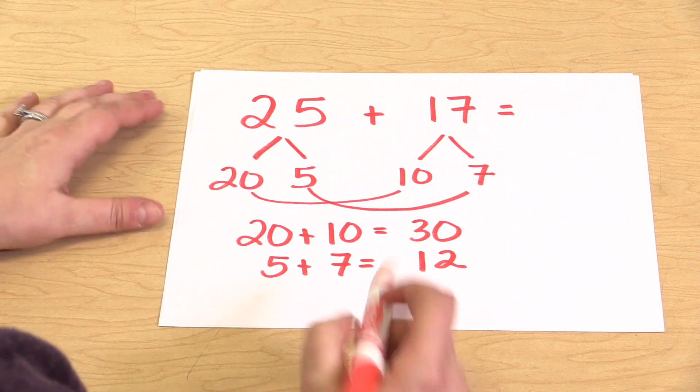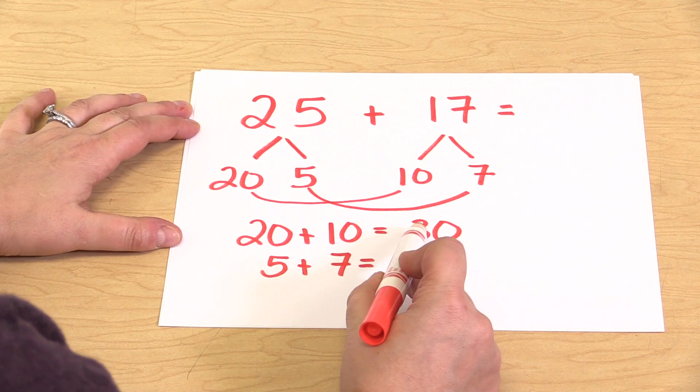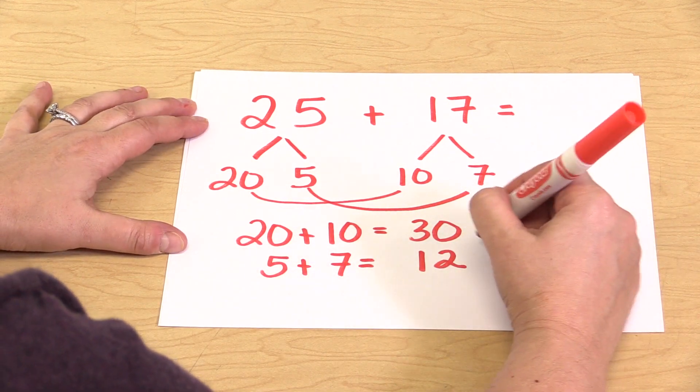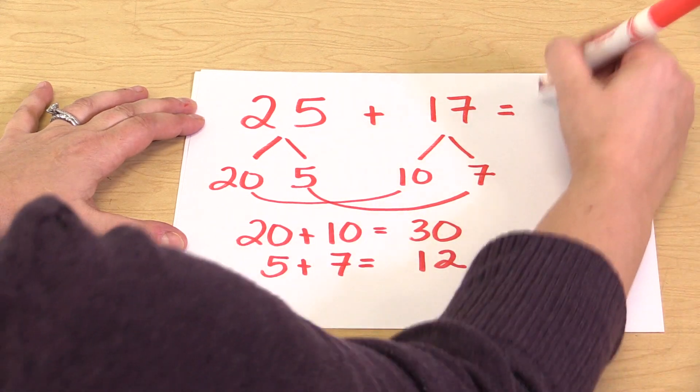The students should see that there's an extra 10 that we can group into our 30 and make that shift, so that the 30 plus the 12 becomes 42.